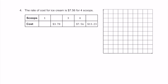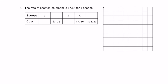Here's number 4, the last one. The rate of cost for ice cream is $7.56 for 4 scoops. Scoops go along the x-axis as our independent variable, and cost of ice cream is represented by y on the y-axis — our dependent variable. We have the original rate of 4 scoops for $7.56. It's a good idea to find the price for just 1 scoop, so: how do we get from 4 scoops to 1? Divide by 4.